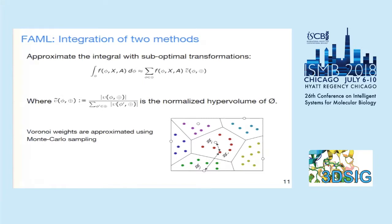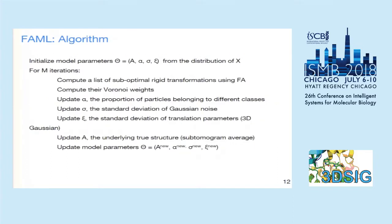The computation of the renormalizing weights is illustrated in the picture. Each transformation is a vector of length six, consisting of three translational parameters and three rotational parameters. For example, if we sample 100 points and 20 points are closest to transformation one, the weight assigned to that transformation would be 0.2.